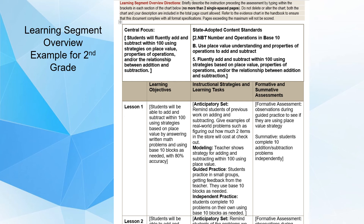In your instructional strategies and learning tasks, include your anticipatory set where you review and get students ready for the lesson, then modeling, guided practice, and independent practice. A formative assessment is almost always observing students during guided practice — in upper elementary you might use an exit ticket, but usually it's observation. Your summative assessment comes at the end and should be the independent practice, such as students completing 10 addition and subtraction problems independently.